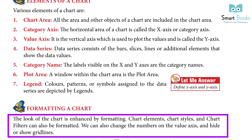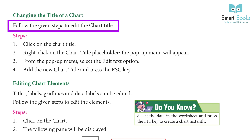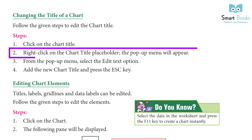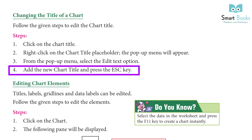We can also change the numbers on the value axis and height or show grid lines. Changing the title of a chart: follow the given steps to edit the chart title. Step 1: Click on the chart. Step 2: Right-click on the chart title placeholder — the pop-up menu will appear. Step 3: From the pop-up menu, select the Edit Text option. Step 4: Add the new chart title and press the ESC key.